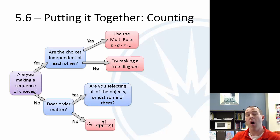If order matters, are you selecting all of the objects or just some of them? If you're doing some of them, then it's a permutation.